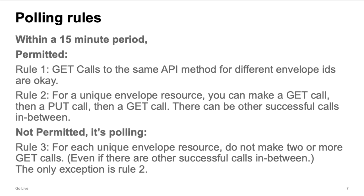In general, your application can poll for a specific envelope status once every 15 minutes or less frequently. Rule number one: you can call the same API method — for example, envelopes GET — more than once in a 15-minute period, only if each call is for a different envelope ID.